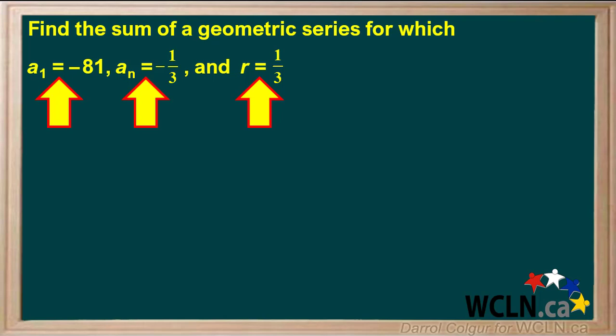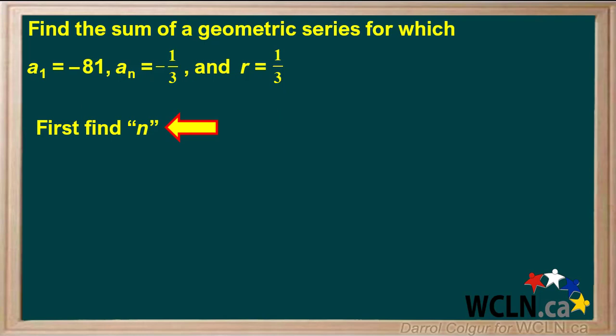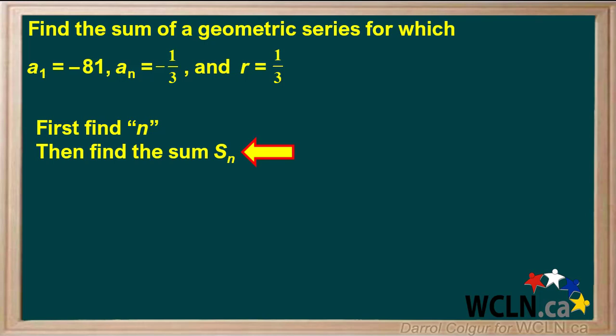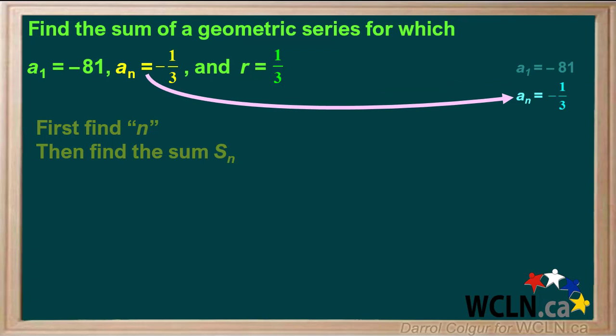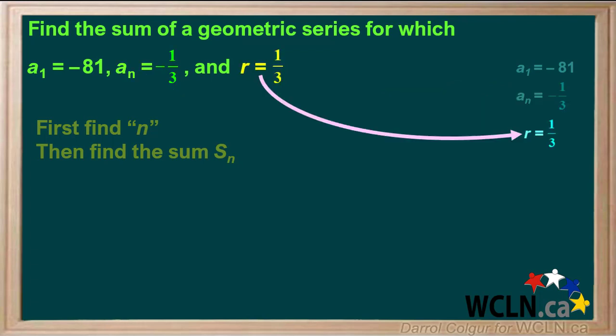This example is a little different. We're asked to find the sum of a geometric series for which a1 equals negative 81, the nth term an equals negative 1/3, and the common ratio r equals 1/3. We'll do this problem in two steps: first we'll find n, then we'll find the sum Sn. The first term a1 equals negative 81, the last term an equals negative 1/3, and the common ratio r equals 1/3.